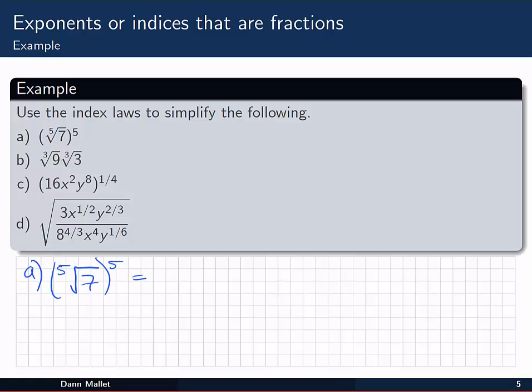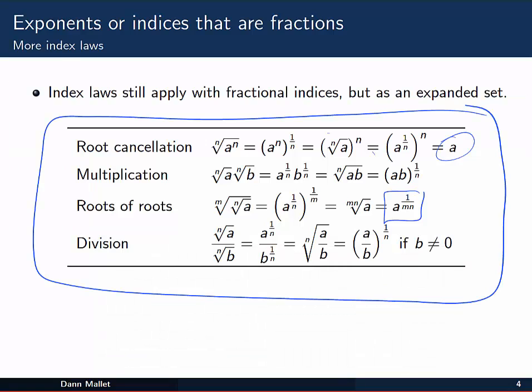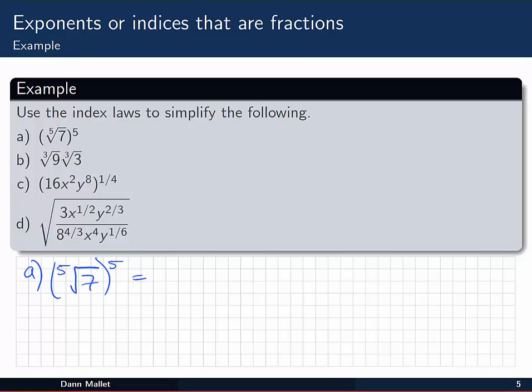Alright, the first question. This one's a bit of an easy one. We've got the 5th root of 7 raised to the 5th power. Remember back on our rules there was a root cancellation rule. The nth root of the number to the nth power just turns out to be the base itself, so we can just write down straight away that that's 7. Or if you like you could go through and you could say well that's 7 to the 1 on 5 because of the root, and then all raised to the 5. So that's 7 to the 1 on 5 times 5. 1 on 5 times 5 is 1, 7 to the 1 is 7.